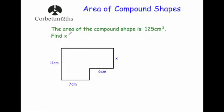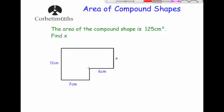Next question: the area of this compound shape is 125 centimeters squared — find x. This is different; we're given the total area and need to find a missing length. It makes sense to split it vertically into two rectangles, so we can find the area of one rectangle easily. Splitting it the other way would make it more complicated.